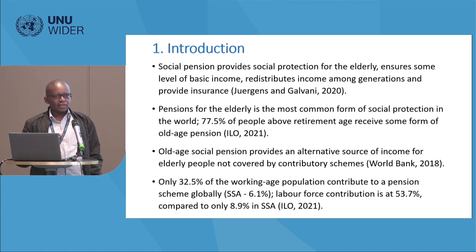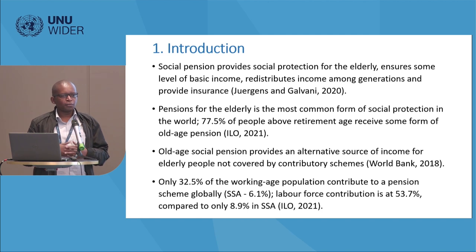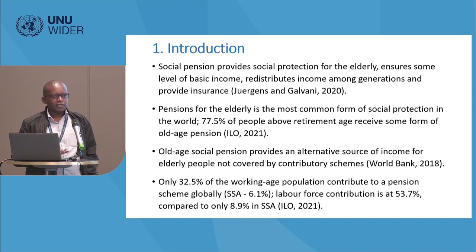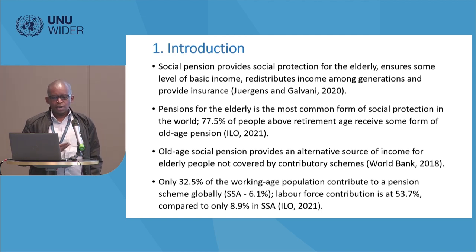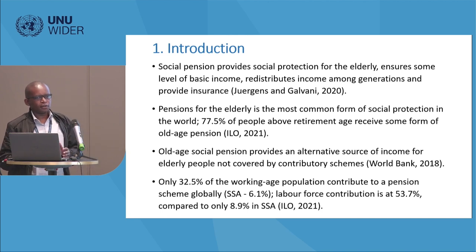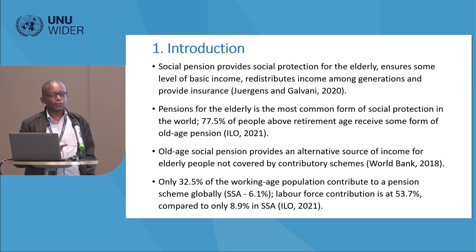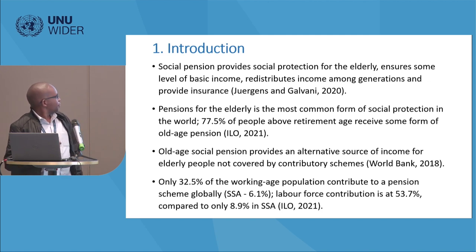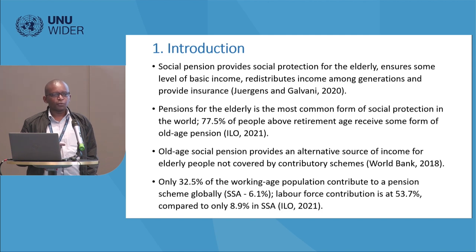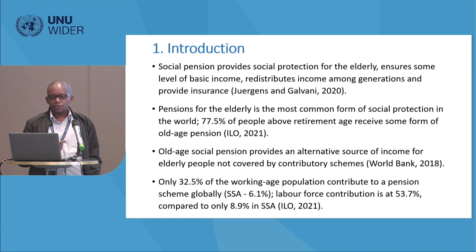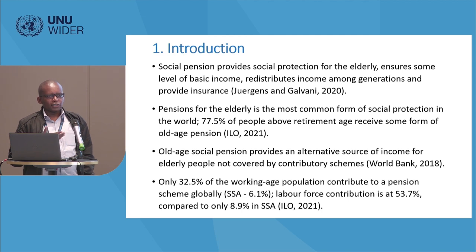One key aspect is that elderly people need support, which mainly comes from social pension programs. This ensures them some level of basic income since they are no longer employed — they need some kind of fallback position. Pensions also provide an avenue for income redistribution among generations and a form of insurance. Statistics from the ILO World Social Protection Report show that about 78% of people above retirement age receive some form of old-age pension, which they rely on as an alternative source of income rather than from the contributory aspect.